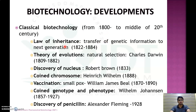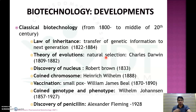Coming to classical biotechnology, the era from 1800 to the middle of the 20th century, there were a lot of discoveries. The law of inheritance, which describes the transfer of genetic information to the next generation causing resemblance and variance between parents and offspring, and which may also cause different genetic diseases, was discovered between 1822 and 1884. Charles Darwin proposed a theory of evolution and natural selection, which states that regular use of any organ leads to development, and survival of the fittest occurs in a natural process — discovered between 1809 and 1888.